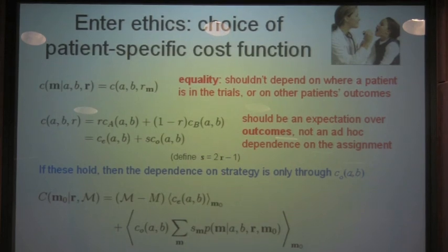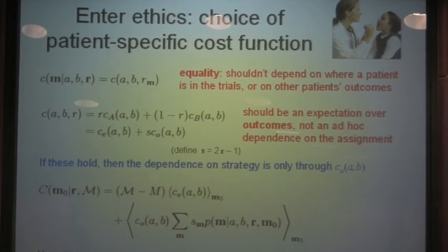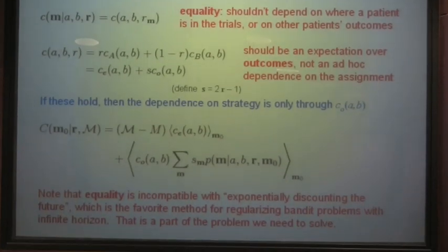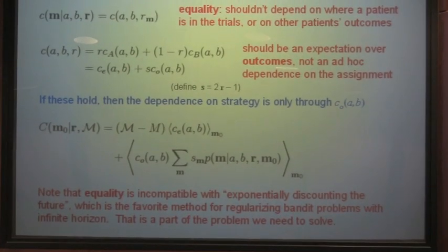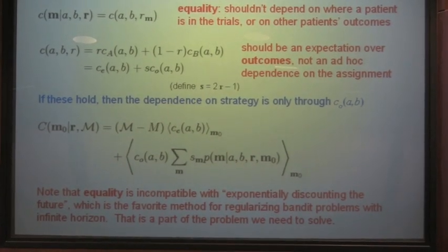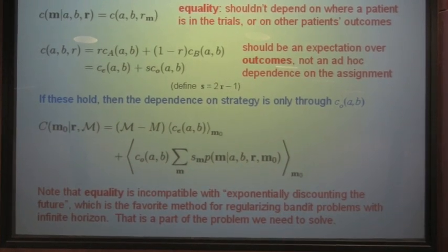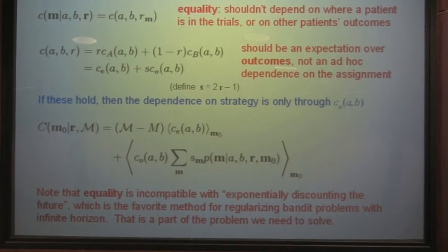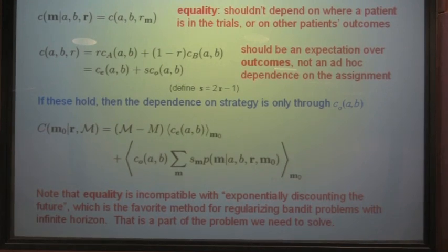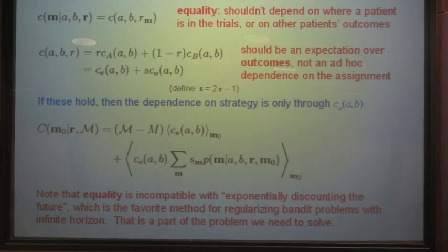I think I already said this, that we can't exponentially discount the future, and that's what makes this problem interesting mathematically if we want the horizon to get very large, because we don't have yet a good way of taking that limit of the total number of patients going to infinity, or rather, to the total size of the population, not just to 50 or 100 people in a clinical trial.